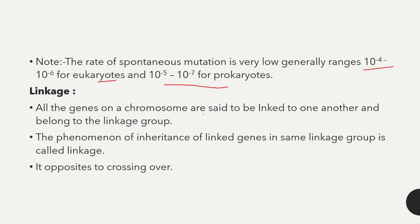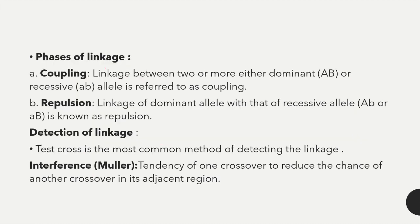The next topic is linkage — all genes on a chromosome are said to be linked to one another and belong to the same linkage group. The inheritance of linked genes in a linkage group is called linkage; it is just opposite to crossing over. The phases of linkage are: first, coupling — linkage between two or more either dominant or recessive alleles.